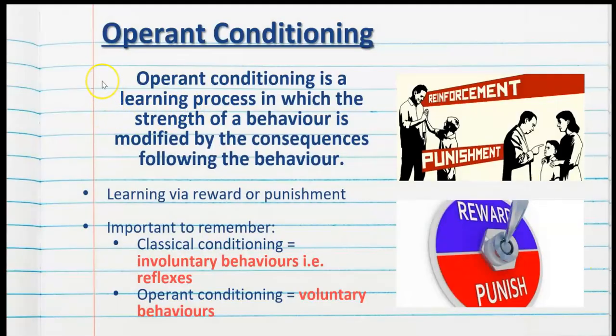Operant conditioning is a learning process in which the strength of a behavior is modified by the consequences following the behavior. To put it simply, it's learning via reward or punishment.